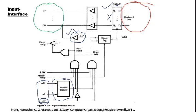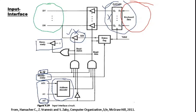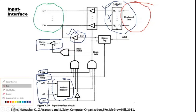The next important portion is the read or write signal, which determines whether you can read the contents from this device interface. Another important thing is the master ready signal, which ensures that the contents within data in or SIN are accessible to the master. These are the major components of this input interface circuit. There is also a slave ready circuit, which intimates the master that the slave is ready.